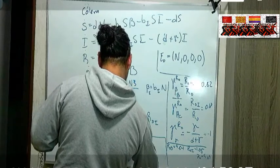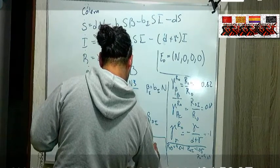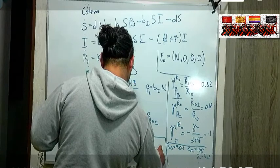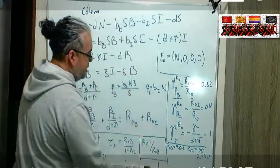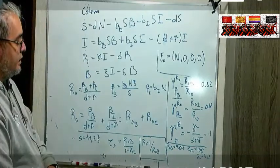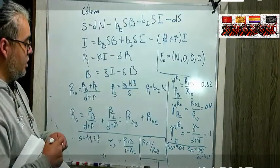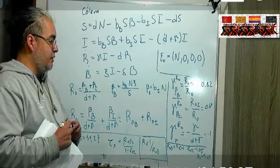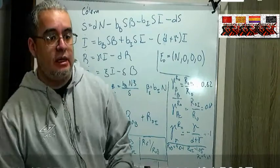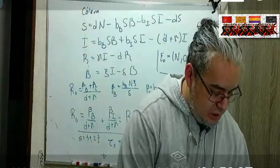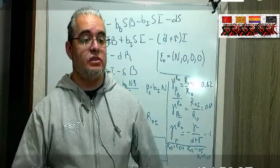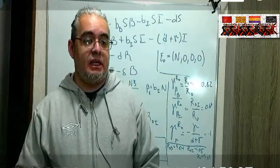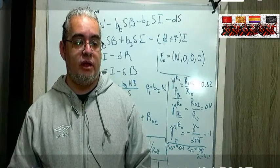Entonces si se puede estar reemplazando el agua limpia a una tasa proporcional a R0 menos 1 sobre R0 B, este número de acá garantiza el mejor control sobre la enfermedad.